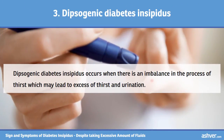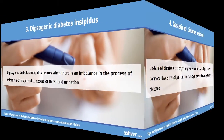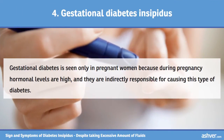Dipsigenic diabetes insipidus occurs when there is an imbalance in the process of thirst, which may lead to excessive thirst and urination. Gestational diabetes insipidus is seen only in pregnant women because during pregnancy hormonal levels are high, and they are indirectly responsible for causing this type of diabetes.